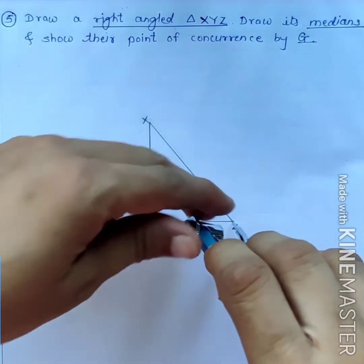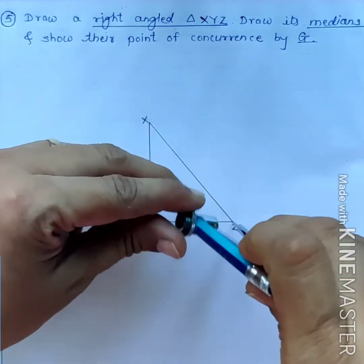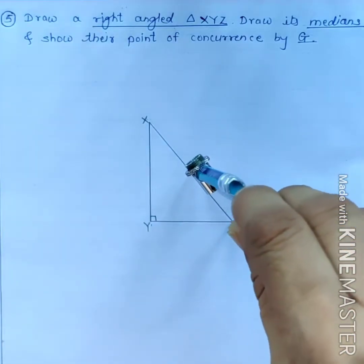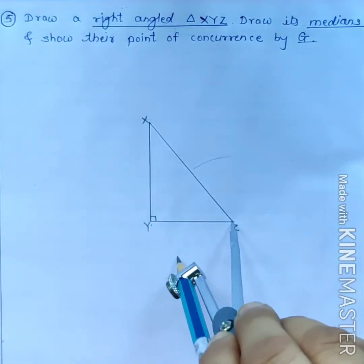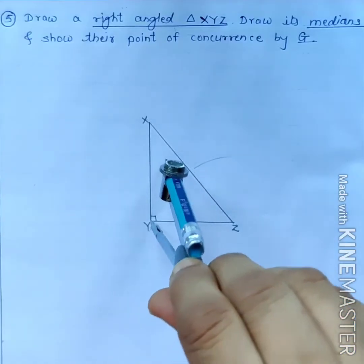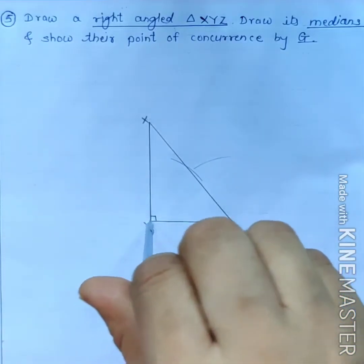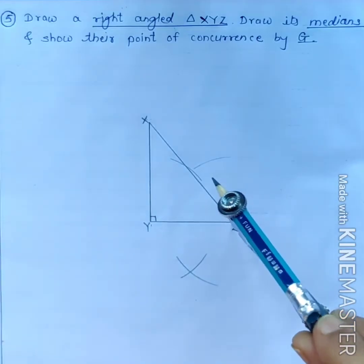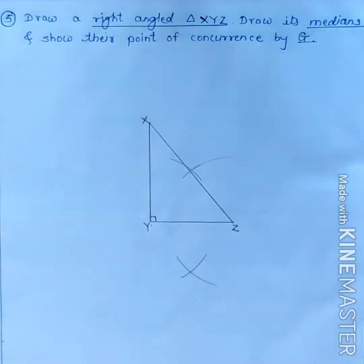First of all, we will find the midpoint of side YZ. Take radius more than half of the segment YZ and draw arcs intersecting the first arcs like this. And join these points.